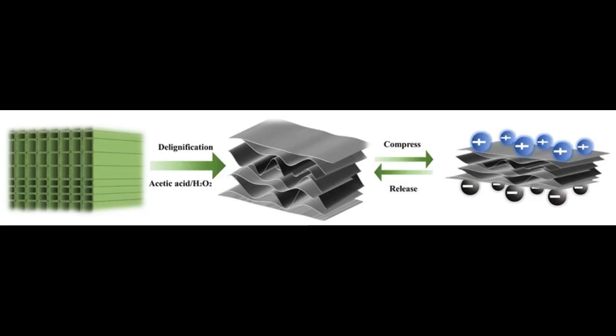In order to transform wood into a material that can easily be deformed, lignin must at least partially be extracted. This is achieved by placing wood in a mixture of hydrogen peroxide and acetic acid. The lignin is dissolved in this acid bath, leaving a framework of cellulose layers.